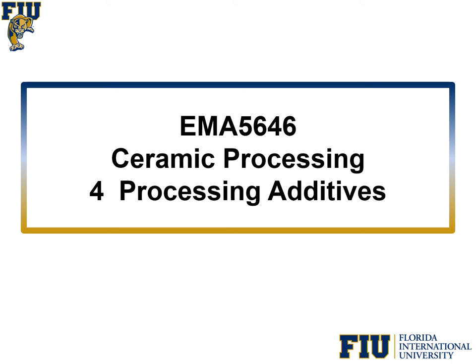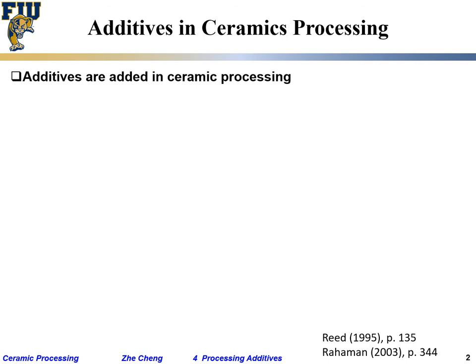After we talk about ceramic synthesis and powder characterization, we're going to talk about processing additives. Other than ceramic powder itself, quite often people have to add something else — in most cases, small molecule organics or large molecule polymers — into the ceramic in order to process it in a better way, to achieve certain microstructures. These additives in ceramic processing are added in small quantities, at low percentage or even lower, to facilitate your processing.